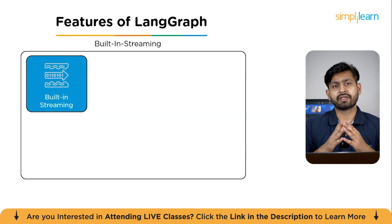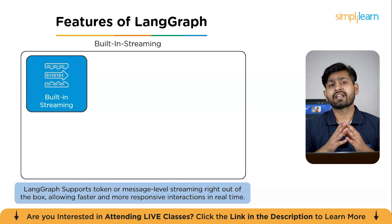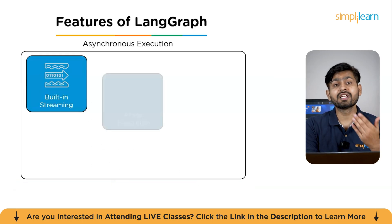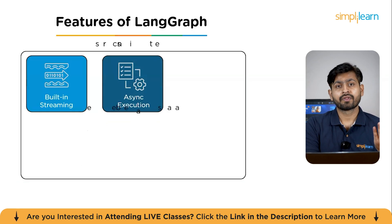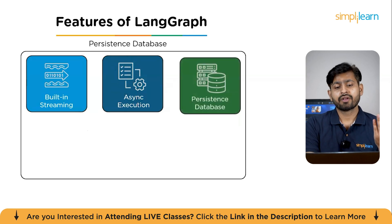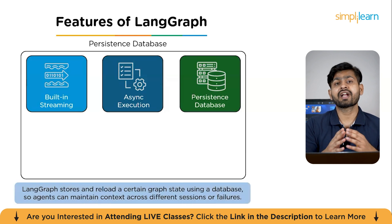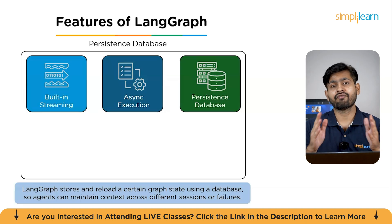The first feature is built-in streaming. LangGraph supports token or message-level streaming right out of the box, allowing faster and more responsive real-time interactions. The second is async execution, which enables multiple steps to run in parallel, making workflows more efficient and reducing wait times. The third feature is persistence — LangGraph lets you store and reload the graph state using a database, so agents can maintain context even across different sessions or failures.